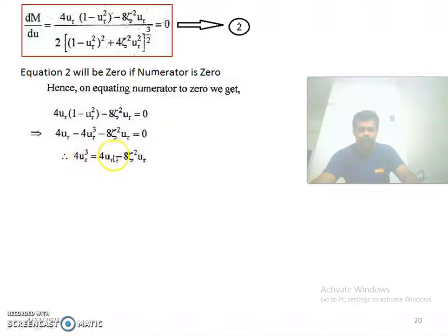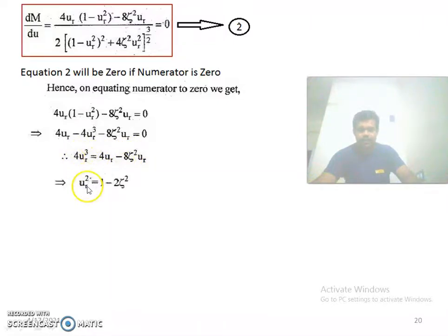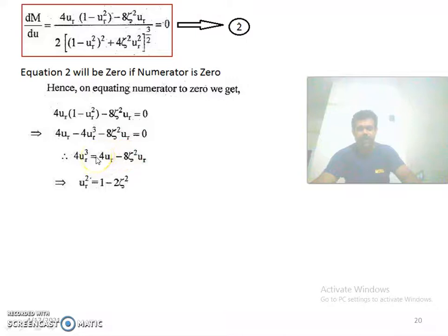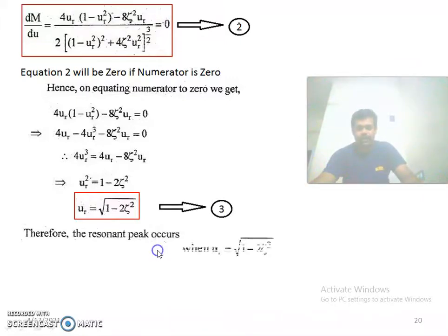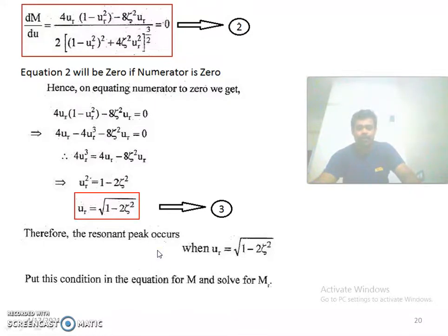Dividing both sides by 4ur (cancelling ur), we get 1 - 2ζ² = ur². Therefore, ur = √(1 - 2ζ²). This is equation 3: the resonant peak occurs when ur = √(1 - 2ζ²). We now substitute this condition back into the expression for M to find the resonant peak value.